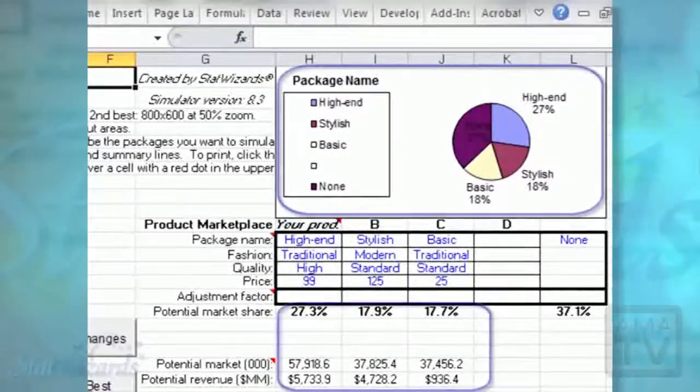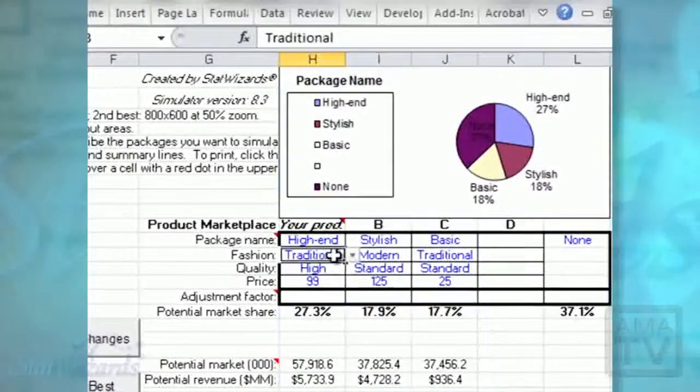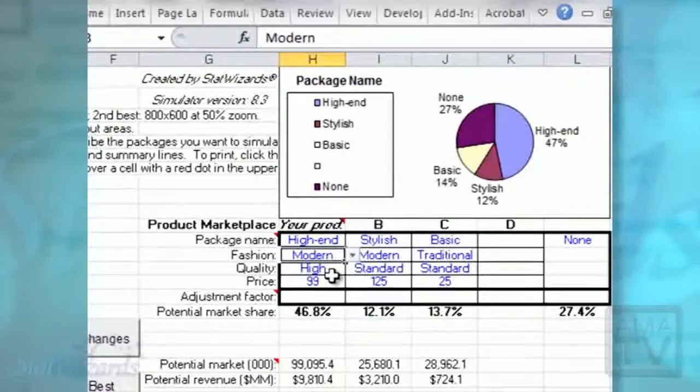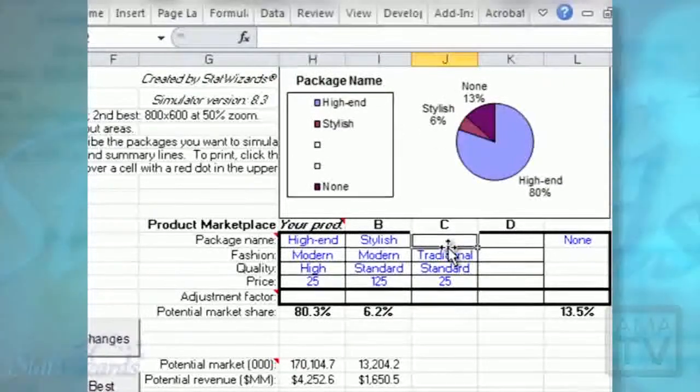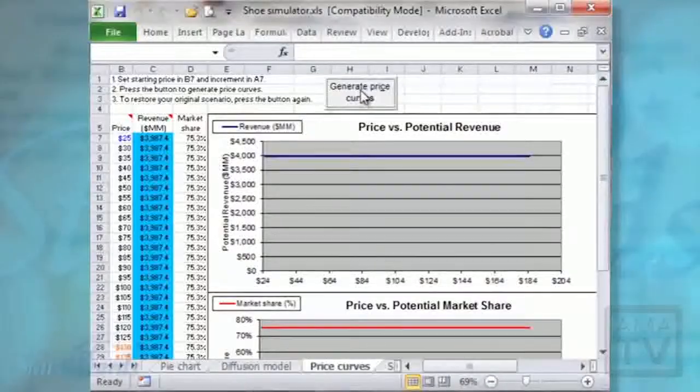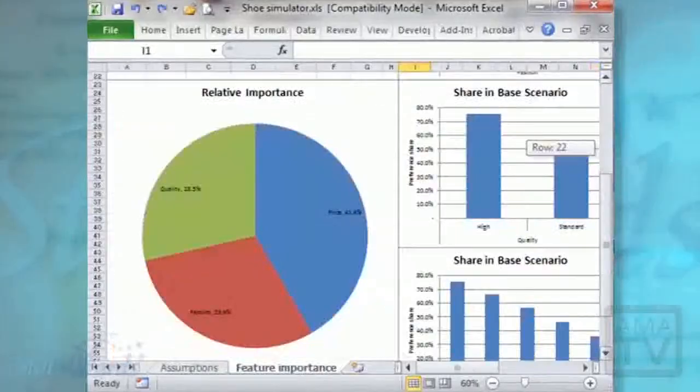You can change any product attribute and instantly view its impact on potential market share. You can add or delete products to see how share changes. You can find the best price for your product. You can also see which attributes are most important. And that's only a start.